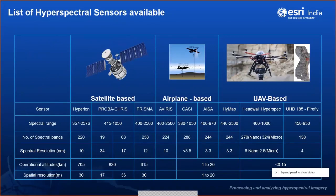There are many hyperspectral sensors available — satellite-based, aircraft-based, and UAV-based. Each carries more than 50 spectral bands with spectral resolutions in nanometers. The newly launched sensor called PRISMA has a spectral range of 415 to 2,500 nanometers and 230 spectral bands. We will see how this data can be processed in ENVI and ArcGIS.